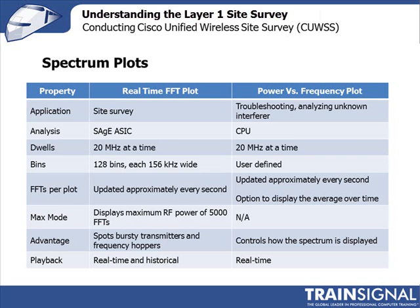Gathering 5,000 samples is really good for spotting bursty transmitters — things like Bluetooth that hop in and out of different frequencies are much more likely to be detected. The real-time FFT plot is where you want to be when looking at broad spectrum activity, such as during site surveys or initial network deployment analysis to find interference sources.